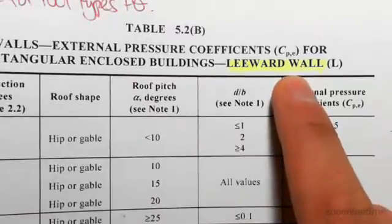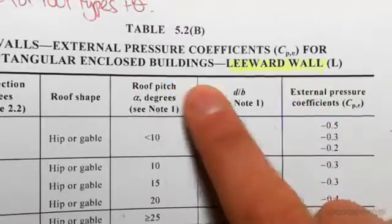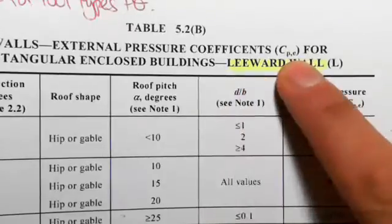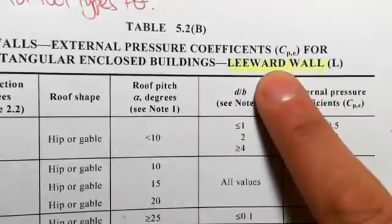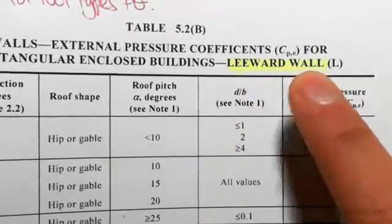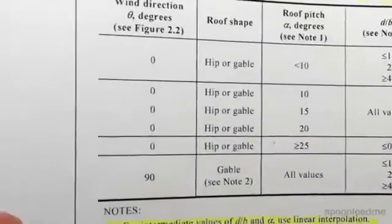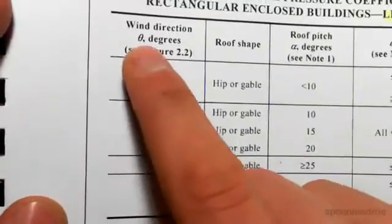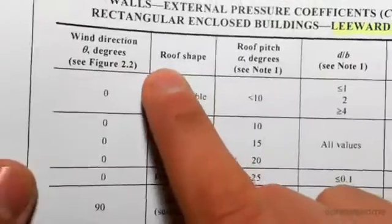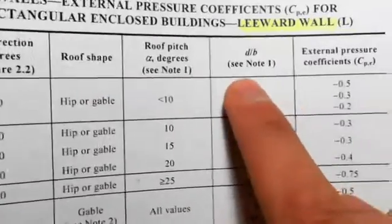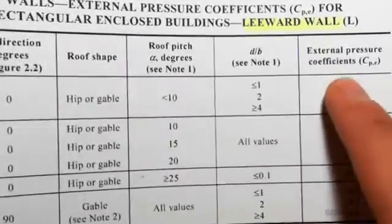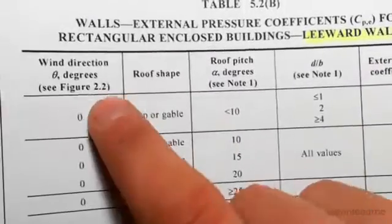We looked at the windward wall in the previous video, which was the previous table. Now we're looking at the leeward wall. The first thing in this table is the wind direction. We've got roof shape, alpha, d over b, and then eventually we'll be able to find our C_p from all these things. So the first thing is the wind direction theta degrees.